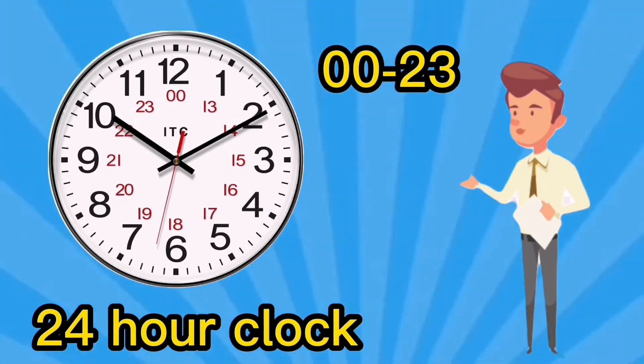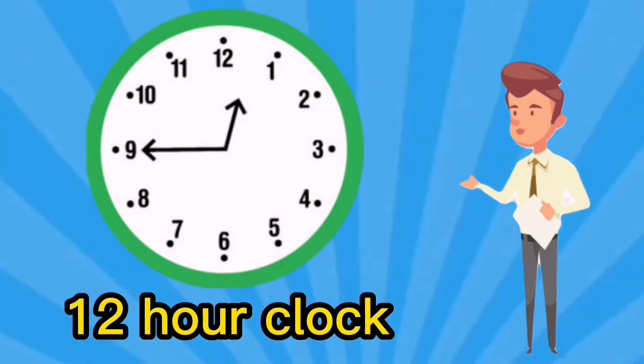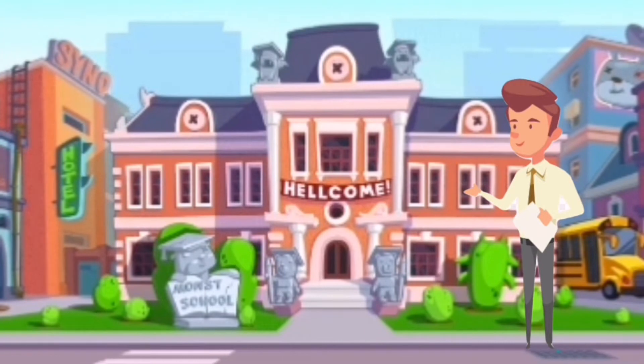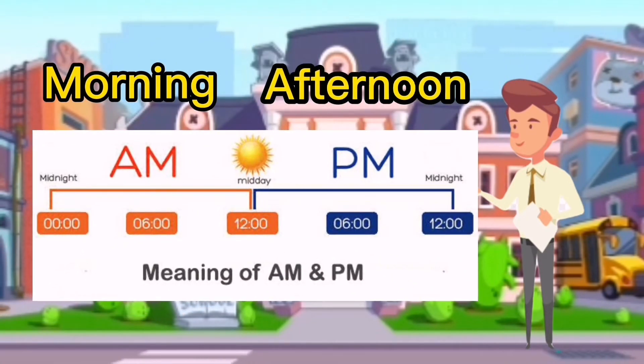In the 12-hour clock we use 1 to 12. To tell the difference between morning and afternoon, we use AM after the time in the morning and PM after the time in the afternoon. Remember, PM starts at 12 o'clock near lunchtime.